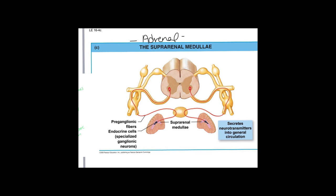The third pathway goes to the suprarenal (adrenal) medulla — supra meaning above, renal meaning kidney. The preganglionic neuron passes through both the sympathetic chain and collateral ganglia without synapsing, going directly to the adrenal medulla. The cells inside the adrenal medulla are modified neurons that act as postganglionic neurons and release norepinephrine and epinephrine.